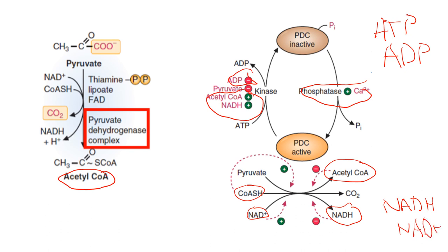A simple way to remember this is: the more carriers on an energy-carrying molecule, the more energy it has. In this case, a phosphate group — triphosphate has more energy than diphosphate. For NADH versus NAD+, the carrier is a hydrogen — so the more hydrogens this molecule has, the more energy it essentially has to give up.